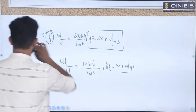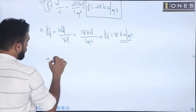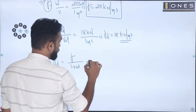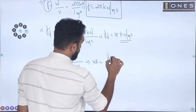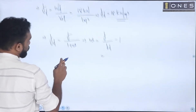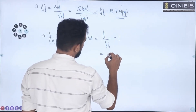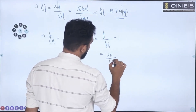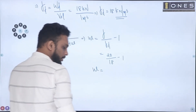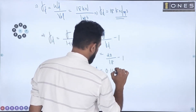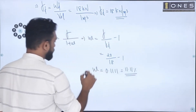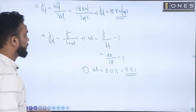Using the formula gamma d equals gamma divided by (1 plus w), substitute the values: gamma is 20 kN per m³, gamma d is 18. Rearranging gives water content w equal to 0.111, that is 11.11%. This is the first part — the water content.